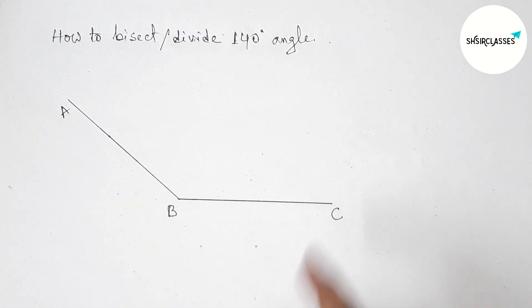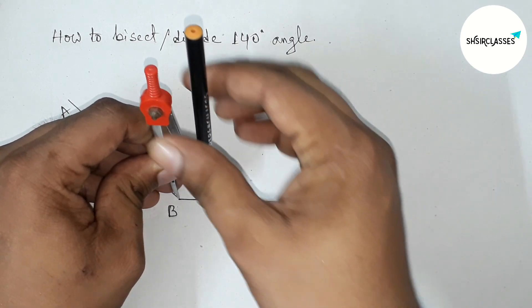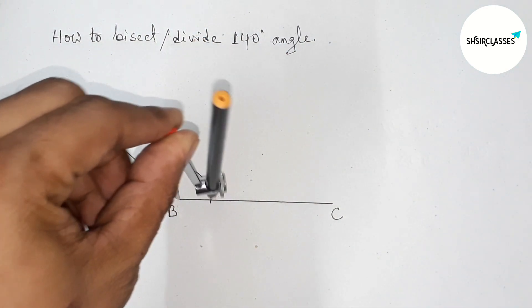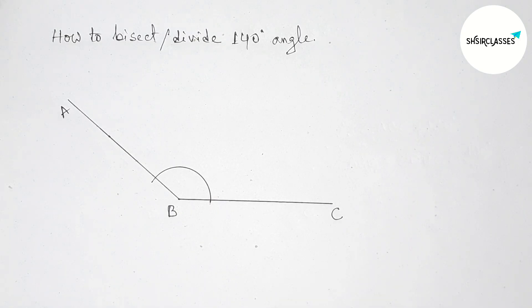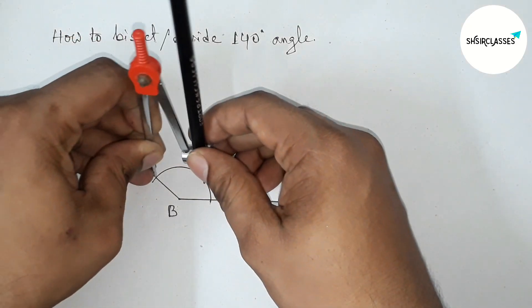Next bisecting this angle, so putting the compass on the point B and taking any length, so first drawing here arc by this way. Now putting the compass here and taking greater than, so first taking greater than half of this by this way.